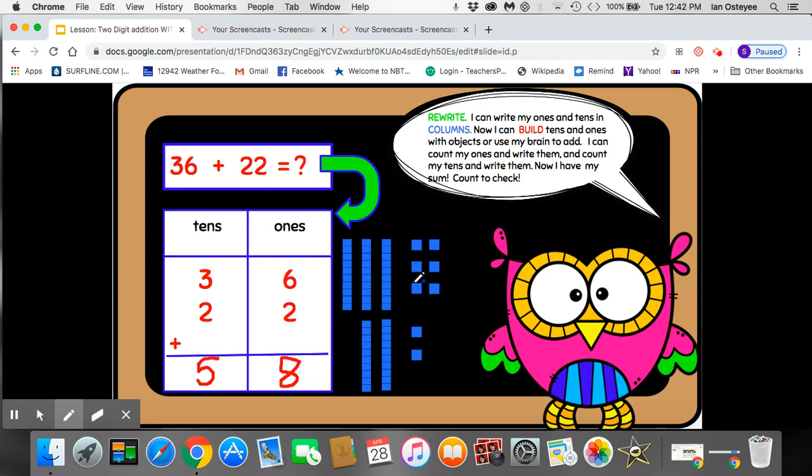51, 52, 53, 54, 55, 56, 57, 58. 36 plus 22 equals 58. And I used columns to help myself add. I also used objects to help count.